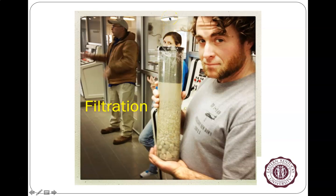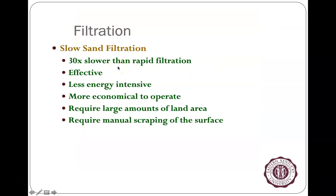If it takes more head pressure to push the water through, it means a lot of the pores are starting to get filled up. Once the head pressure gets too high, or turbidity rises above acceptable levels, they can take the filter offline and backwash it — pushing all the water out along with the sludge and muddy material. The water plant actually has an NPDES permit for that backwash water, which goes to sludge ponds where the sludge is removed before the remaining water is discharged under permit.